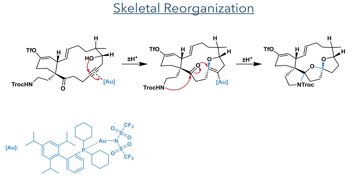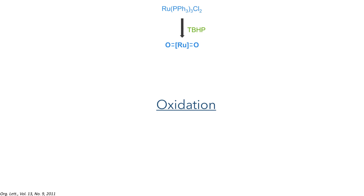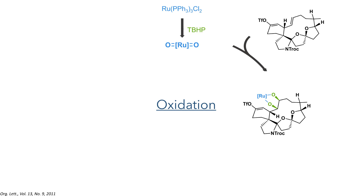The gold-win catalyst can coordinate to the alkyne, making it more electrophilic, and this allows for the intramolecular attack of the hydroxyl group. The amine could then attack the ketone, allowing the oxygen to act as a nucleophile towards the gold-activated enol ether, forming both the aminal and acetal bonds. This product was not isolated and instead was directly oxidized using dichloro-tris(triphenylphosphine)ruthenium, which is first oxidized by tert-butyl hydrogen peroxide to form a ruthenium dioxide complex that can undergo a cycloaddition to the alkene.